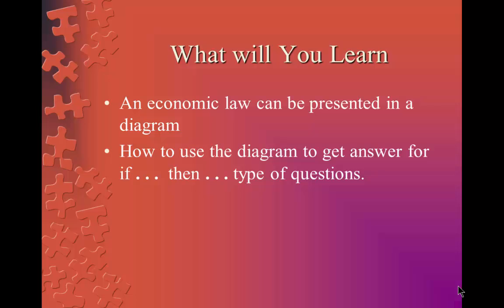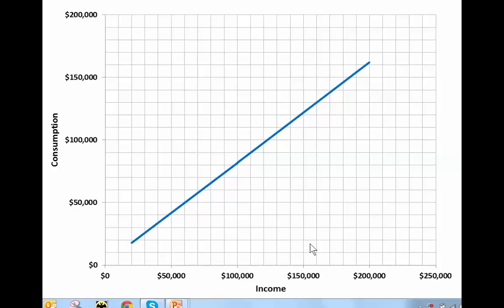How this works in detail can be best shown using an example. The blue graph in the diagram shows Ant's consumption behavior. It shows how income causes consumption. How does it work?